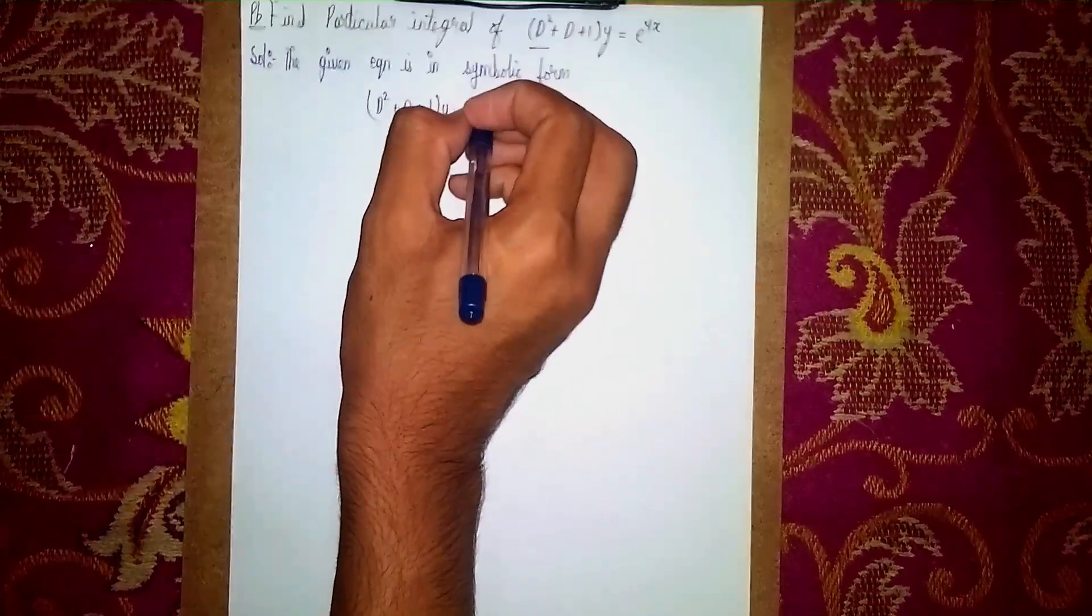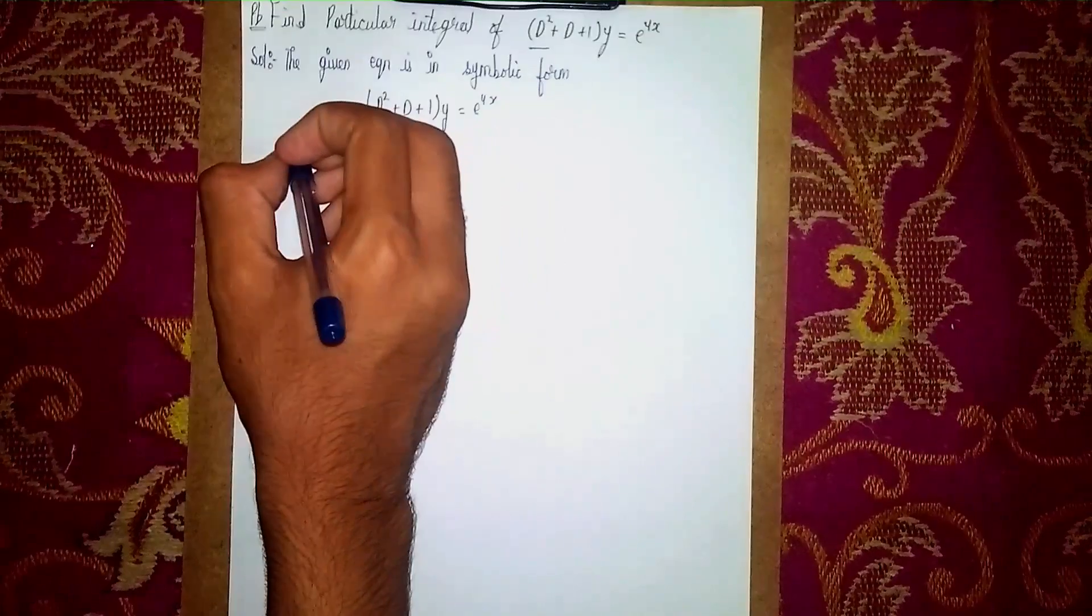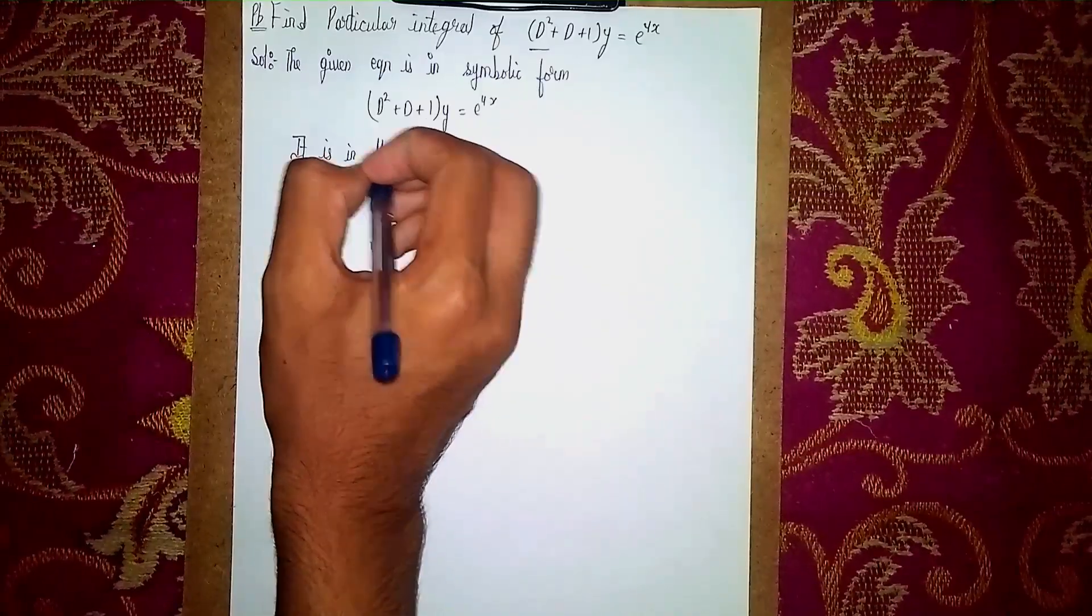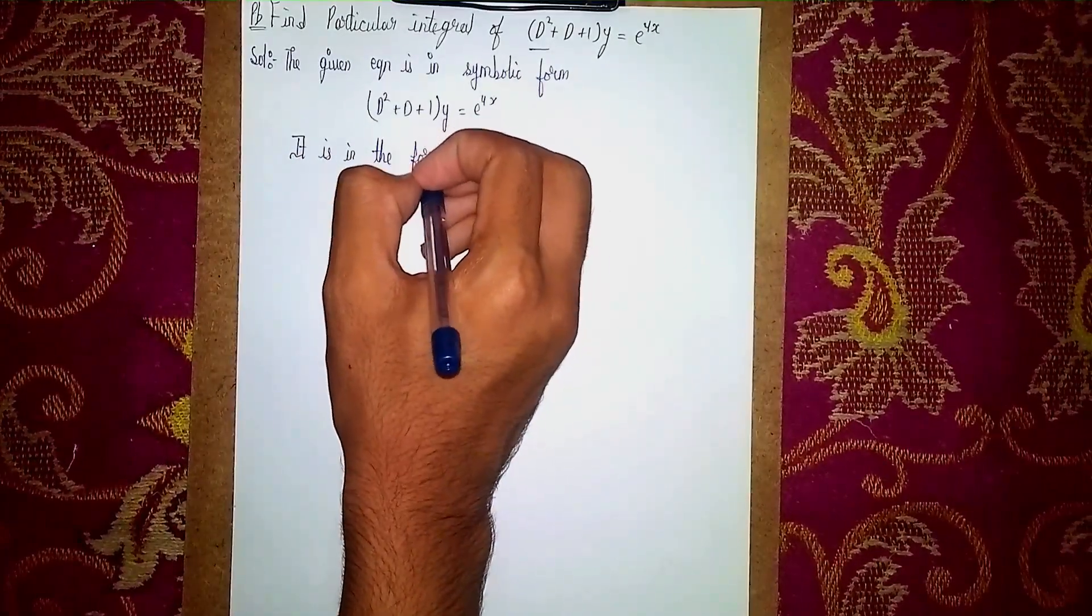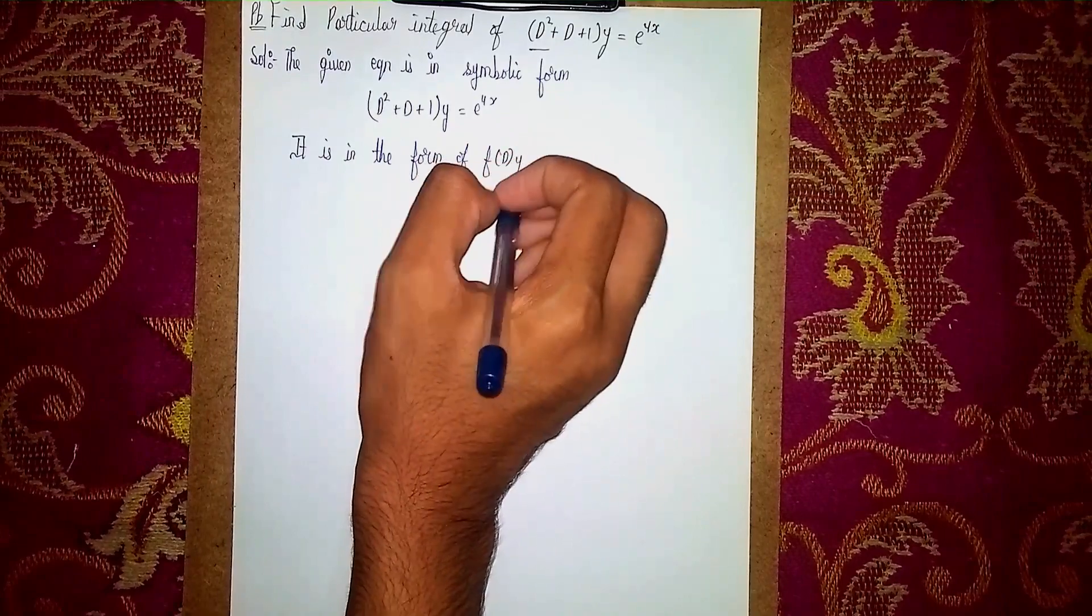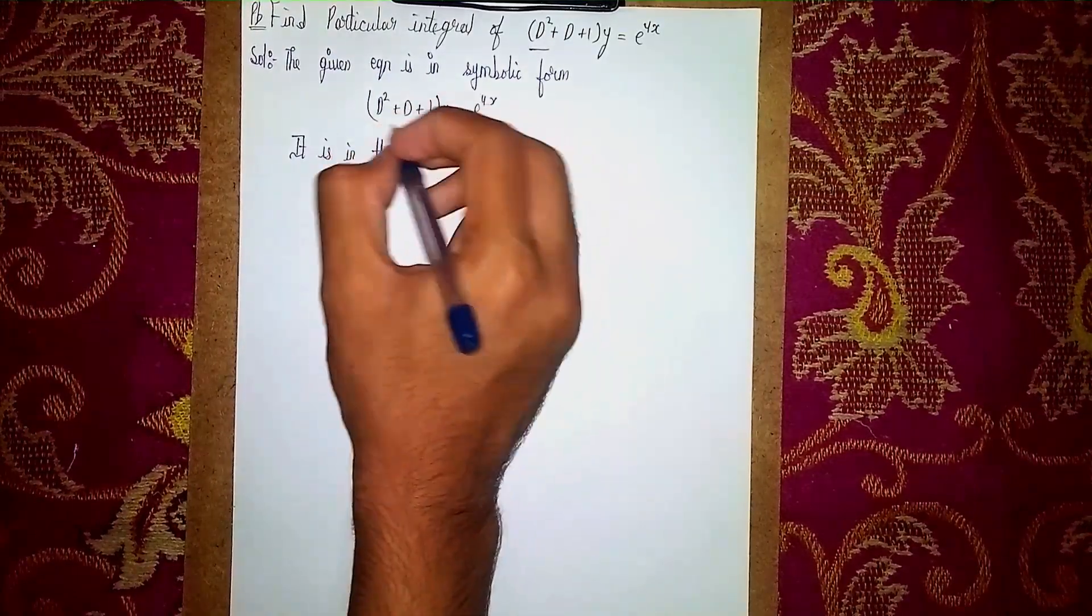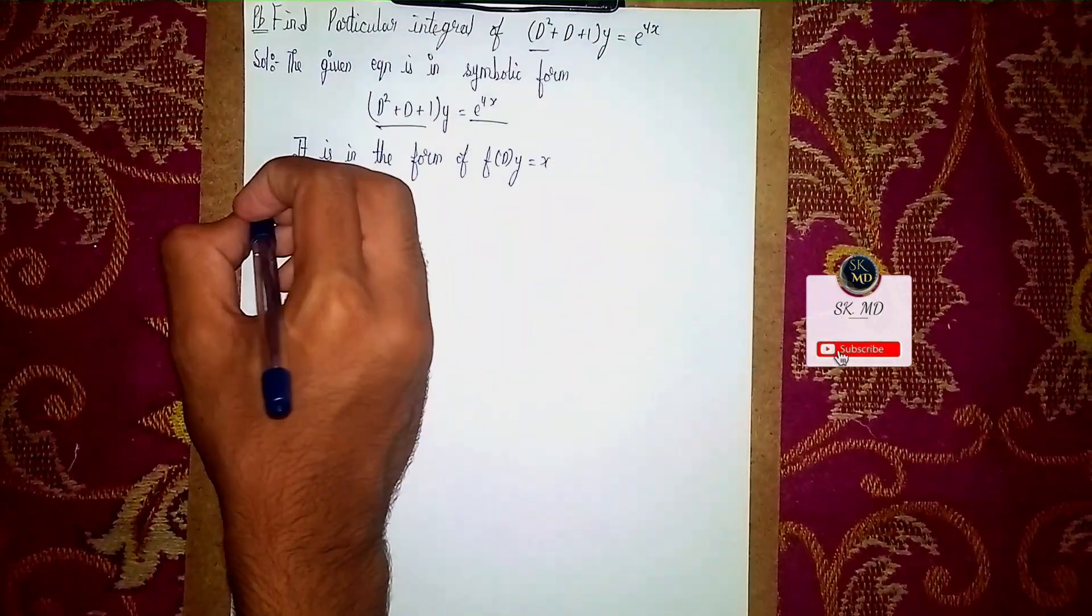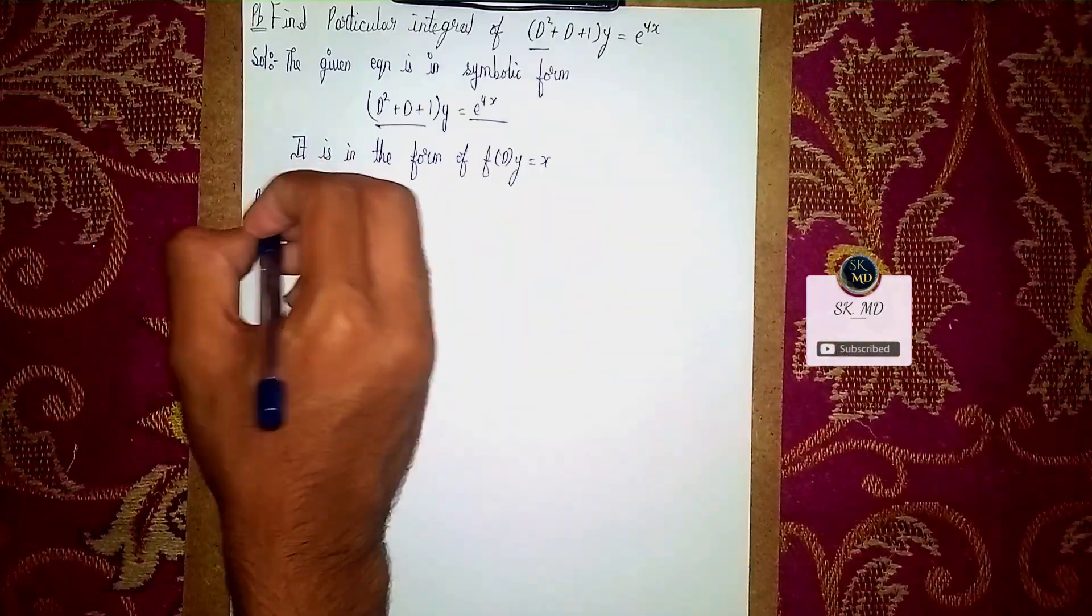Now write another statement: it is in the form of f of d times y equals x. Okay, this is f of d and this whole function is x. Now we find the particular integral, so P.I. is the short form of particular integral.